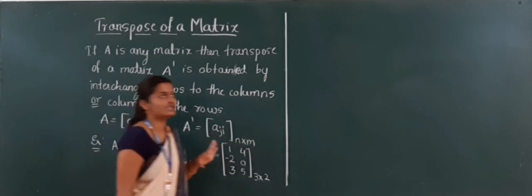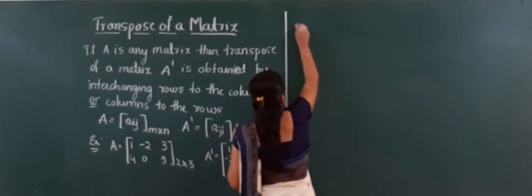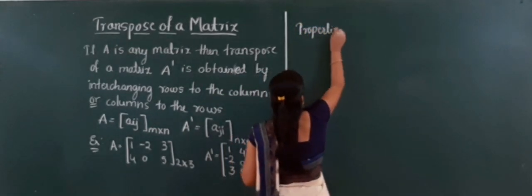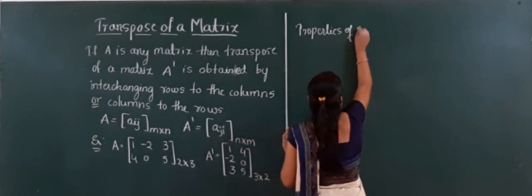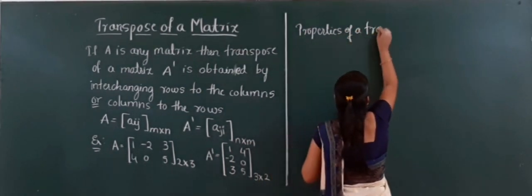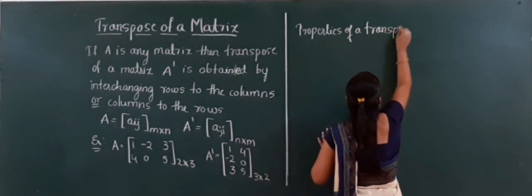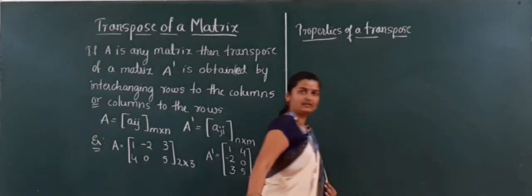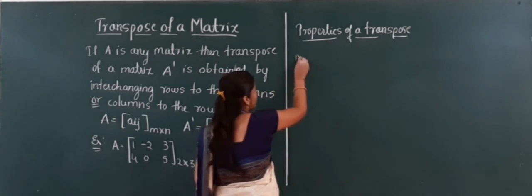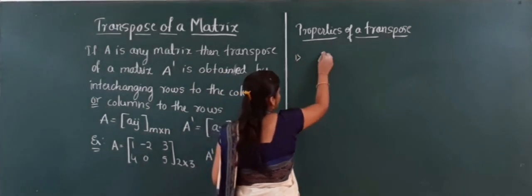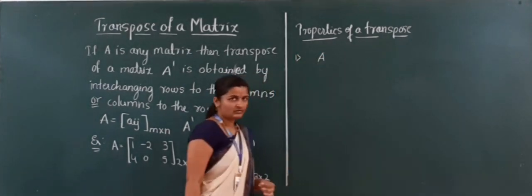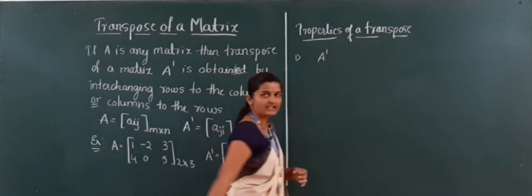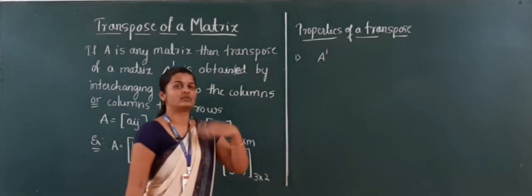This is known as the transpose of a matrix. Next, the properties of transpose. So what are the properties of transpose of a matrix? The first property: if we apply the transpose to a matrix A, we get another matrix A dash.